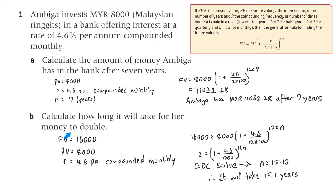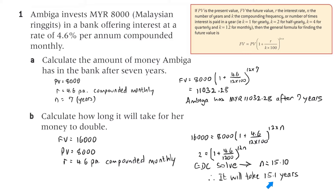Part B: Calculate how long it will take for her money to double. The future value is 16,000 because it's twice the present value. R is 4.6, compounded monthly, so K is 12. We solve using the graphic display calculator and we get 15.1 years. In some exercises, that would be rounded up to 16.